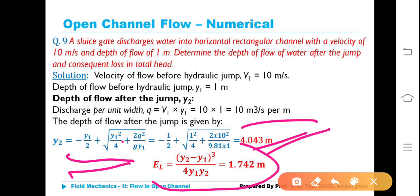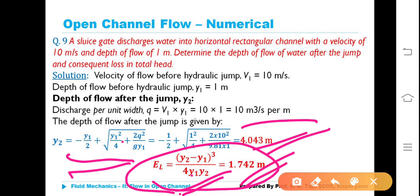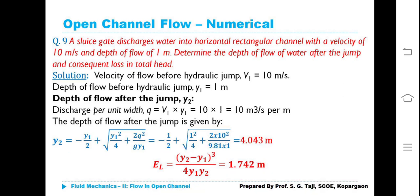Therefore, the consequent head loss: EL = (Y2−Y1)³ / (4·Y1·Y2). Do not get confused between loss in head and loss in energy — energy is nothing but head. Y1 is known, Y2 is known; substituting, EL = 1.742 meters.